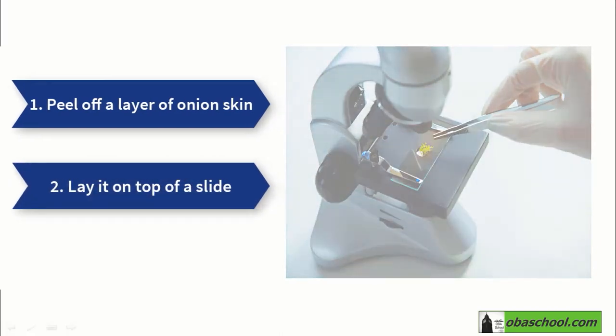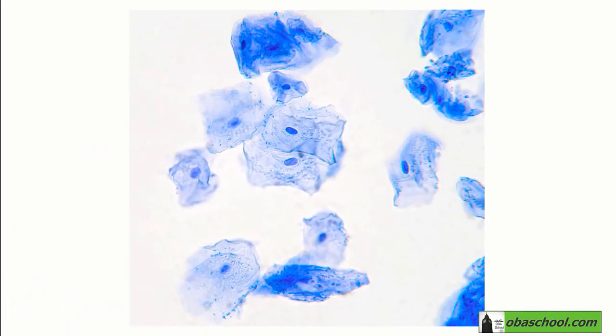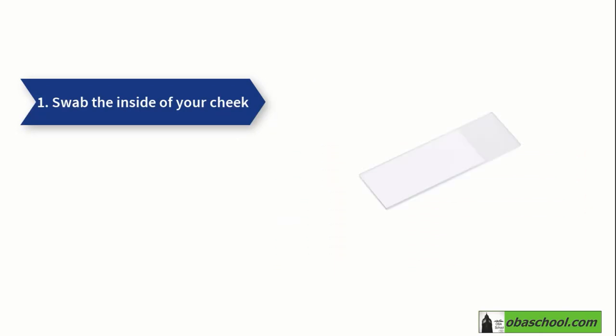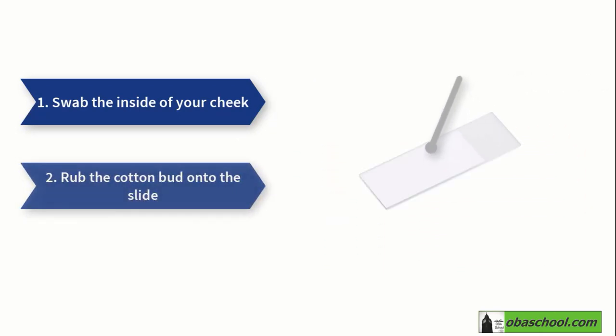While when viewing animal cells, for example cheek cells, we use a cotton bud to swab the inside of our cheeks in order to get the cells. And then we rub the cotton bud onto the slide to transfer the cells.